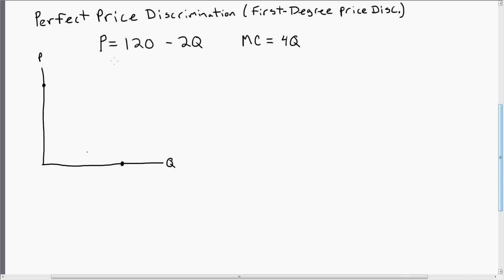The vertical intercept is going to occur when Q is 0. If Q is 0, price equals 120. So if Q is 0, price is 120.